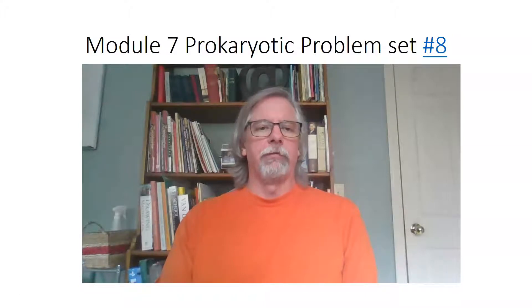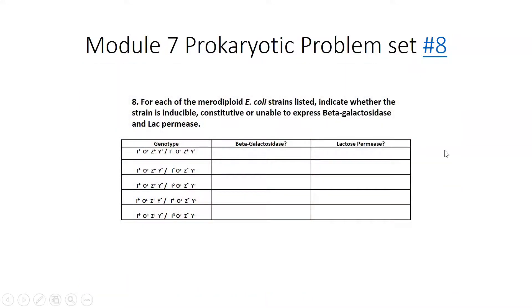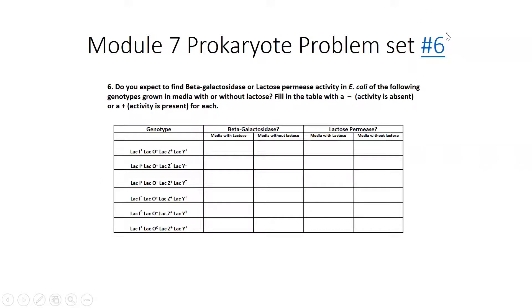The first problem is number six on that problem set. It goes through different genotypes and asks for the associated phenotypes — specifically expression of beta-galactosidase, encoded by the lacZ gene, or lactose permease, encoded by the lacY gene, under different media conditions: plus lactose or minus lactose for both.